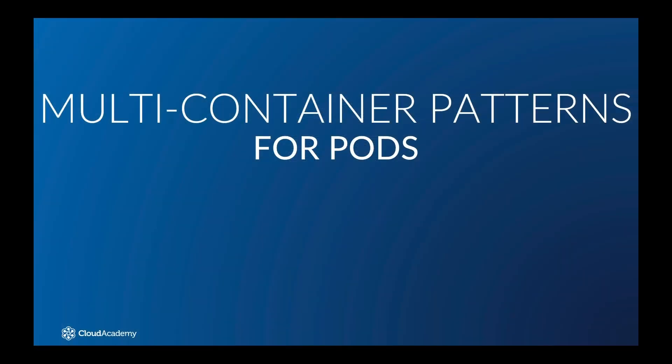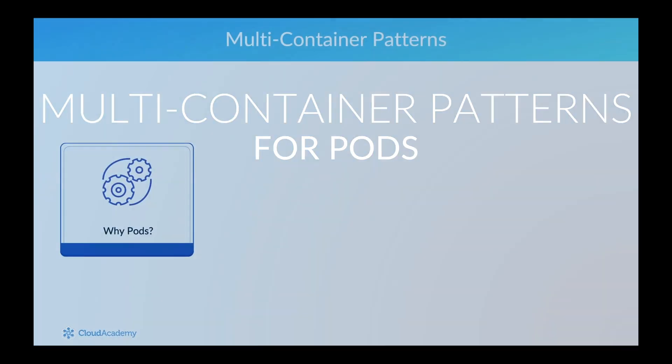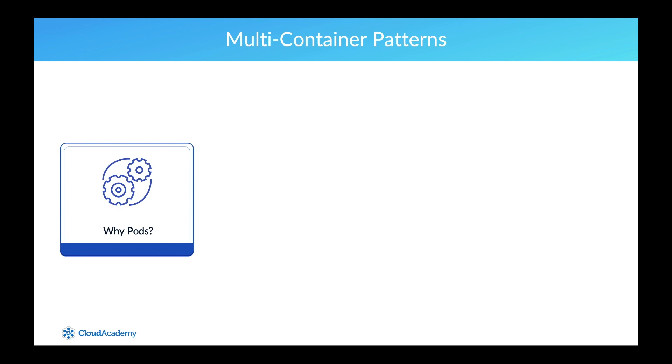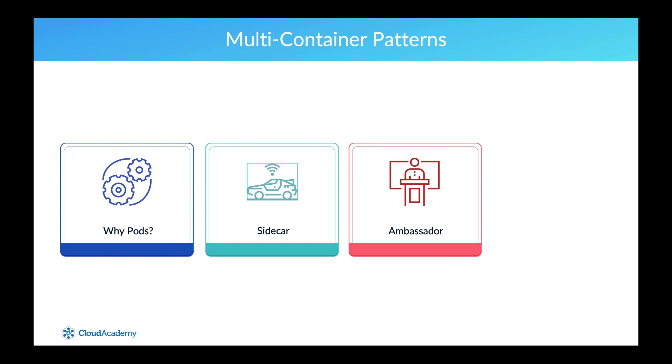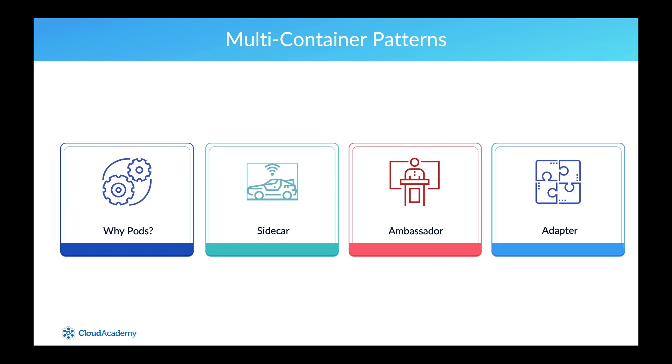Kubernetes pods allow you to have multiple containers sharing the same network space and can also share storage between containers. Often using a single container is the right choice for a pod, but there are several common patterns for when you should use multiple containers. We will first explain the motivation behind pods and then dive into three multi-container patterns: the sidecar, the ambassador, and the adapter.